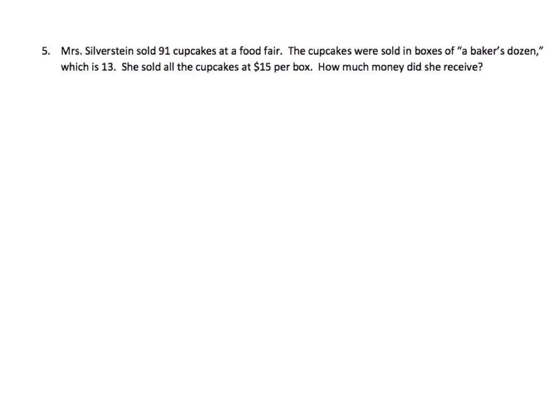Let's finish. It says Mrs. Silverstein sold 91 cupcakes at a food fair. The cupcakes are sold in boxes of a baker's dozen, which is 13. So she's selling them in boxes of 13. It's an old expression where the baker would traditionally throw in one free item when you bought a dozen. She sells the cupcakes at $15 a box. How much did she receive? Well, we know that we have 91 cupcakes, and we have to find groups of 13. So we know there's 13 in each group, but we don't know how many groups.